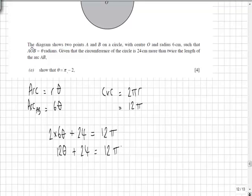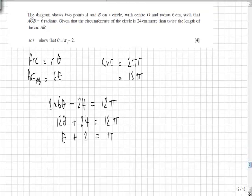We can divide by 12 because all the coefficients are factors of 12. Dividing by 12, we have θ + 2 = π. Then it becomes a simple rearrangement: θ = π - 2. Proven.